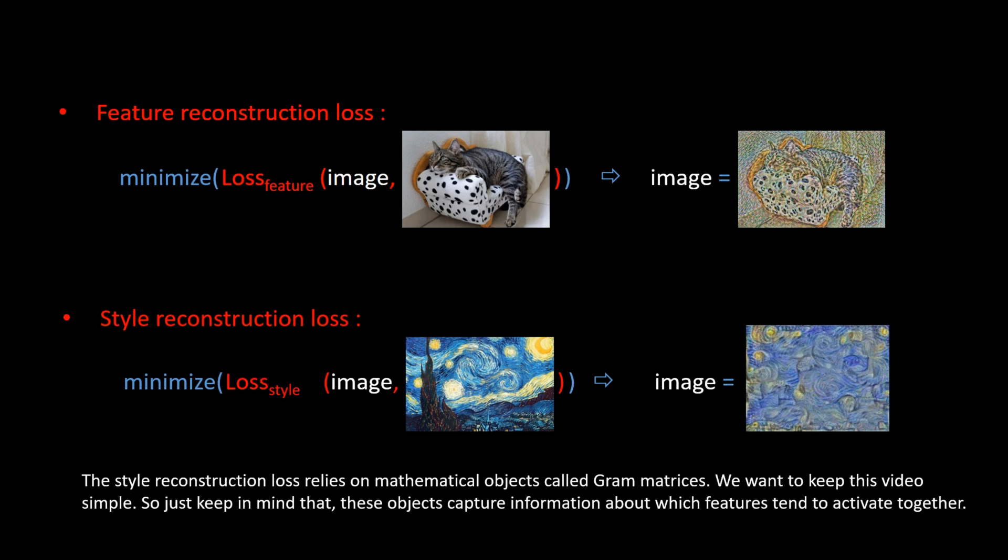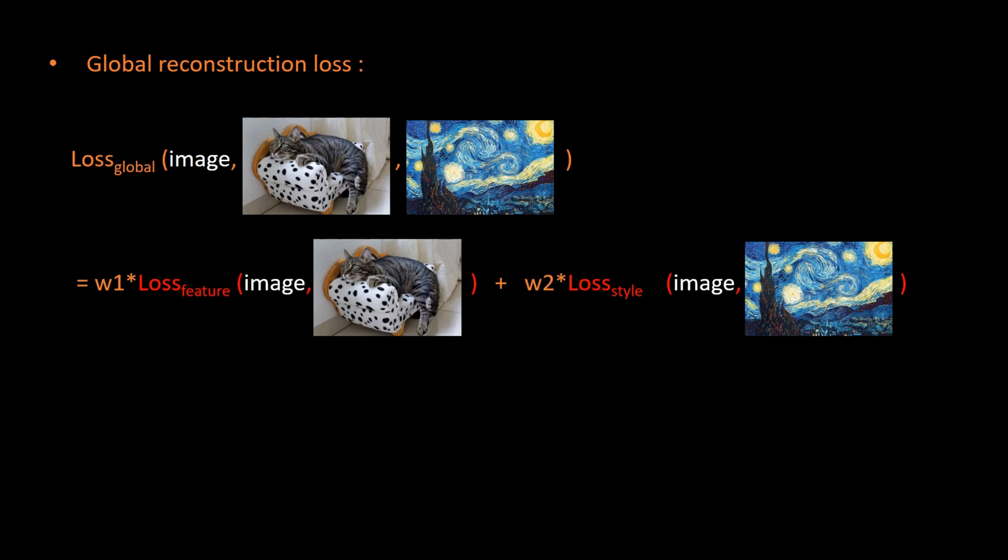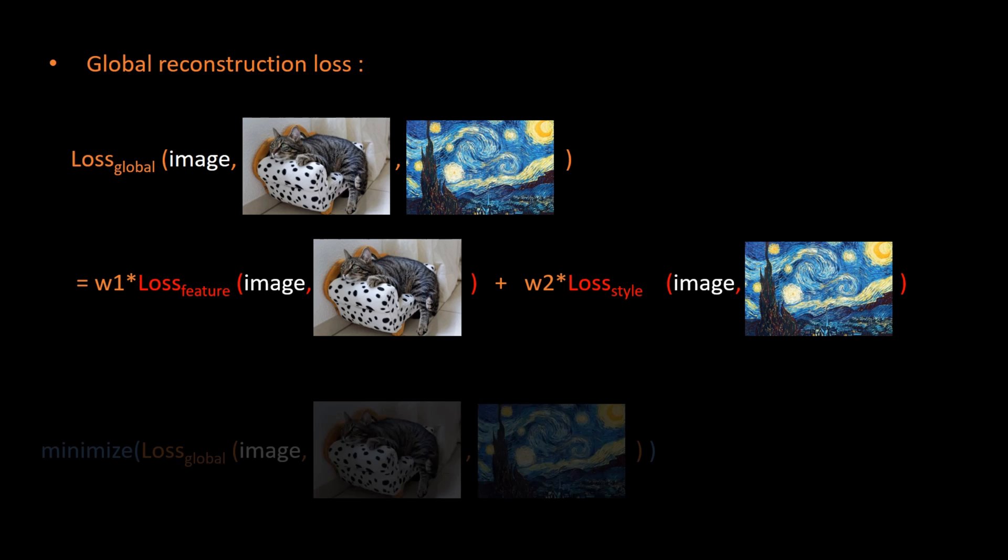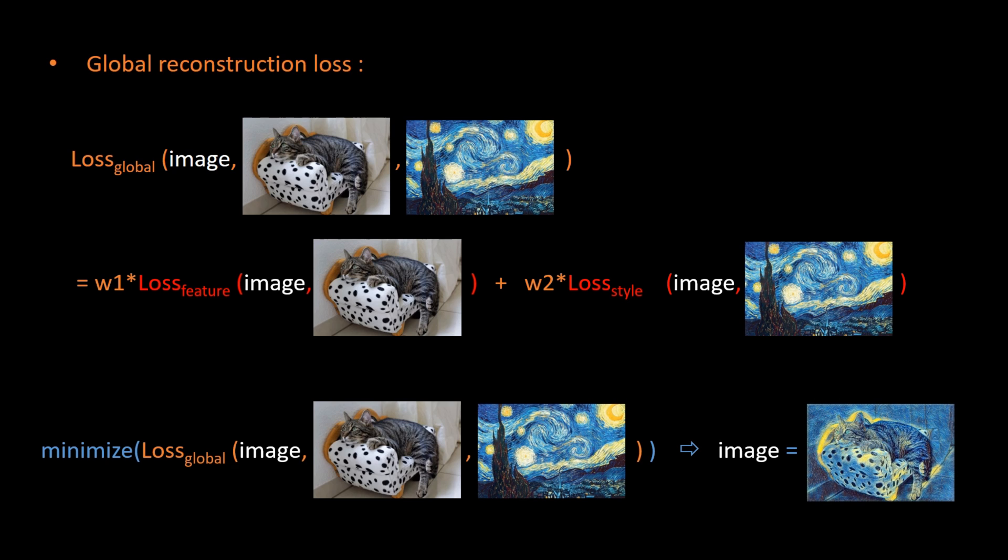The next step toward our style transfer system, is to define a global reconstruction loss, as a weighted sum of the feature loss, and the style loss. Now, if we try to determine an image that minimizes this global loss, we finally get what we want, an image with the content of the content image, and the style of the style image. By modifying the weights W1 and W2, we can put more or less style effect on the constructed image.